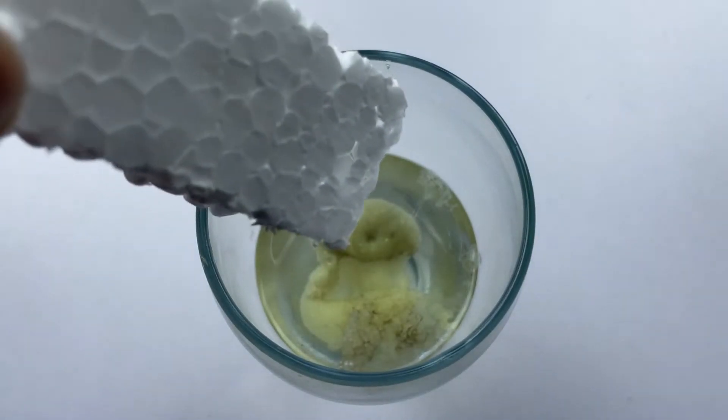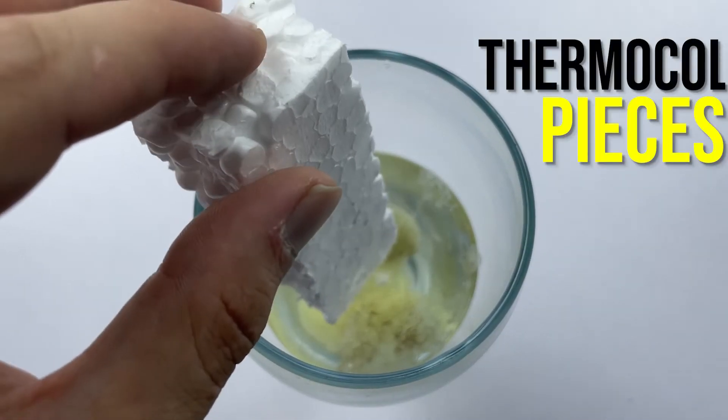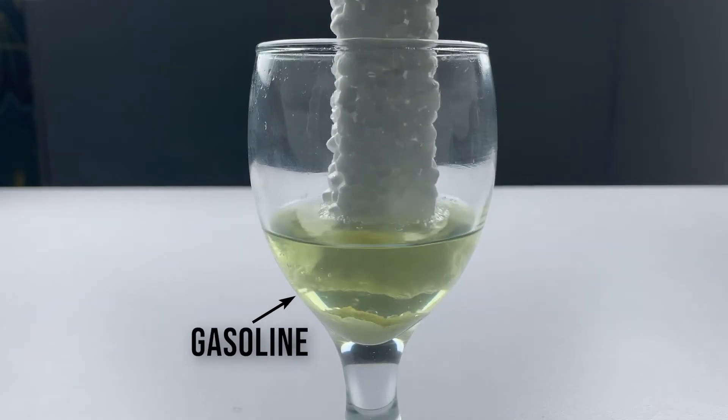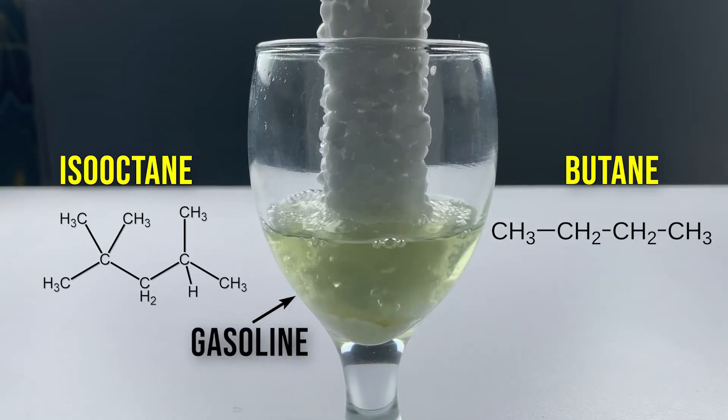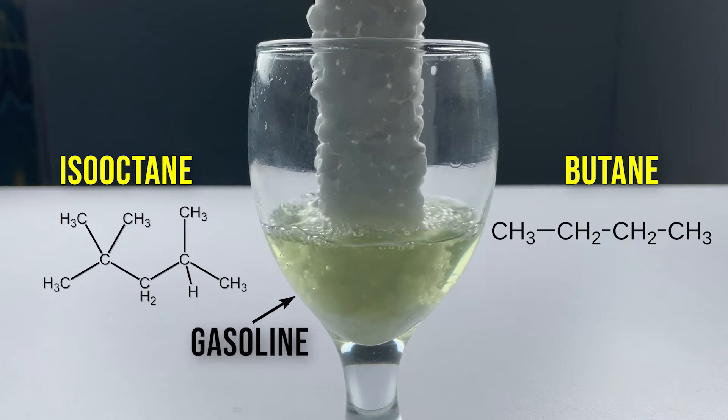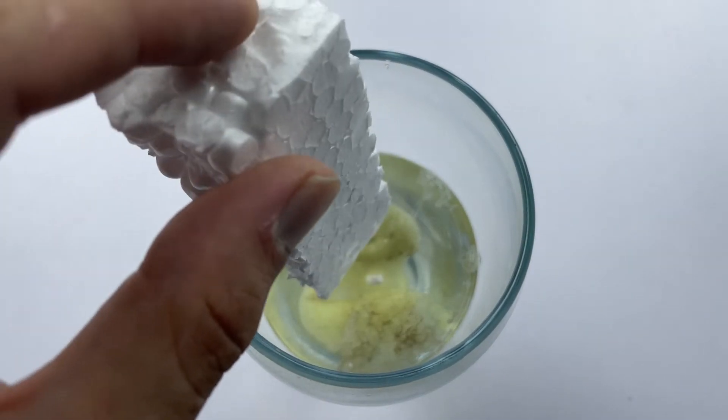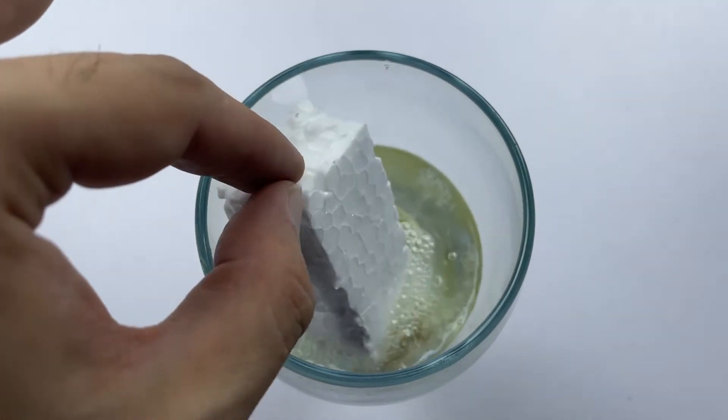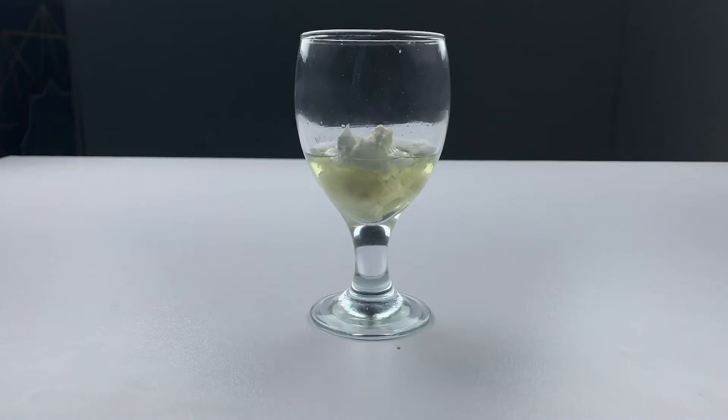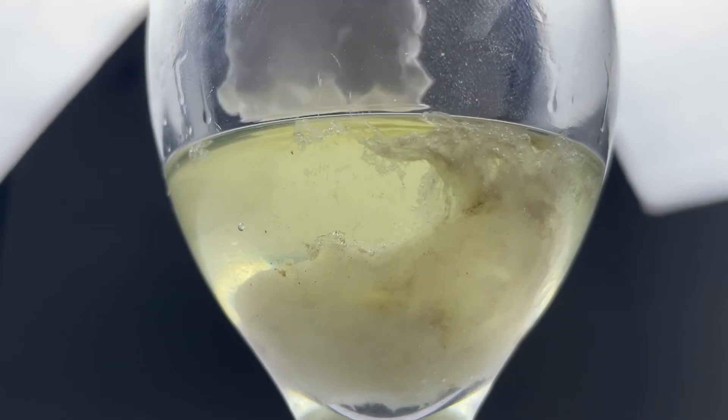In the next step to make glue, keep adding thermocol pieces into the petrol. Gasoline is a mixture of isoctane and butane. Thermocol is a polymer of styrene. Both dissolve together and make glue.